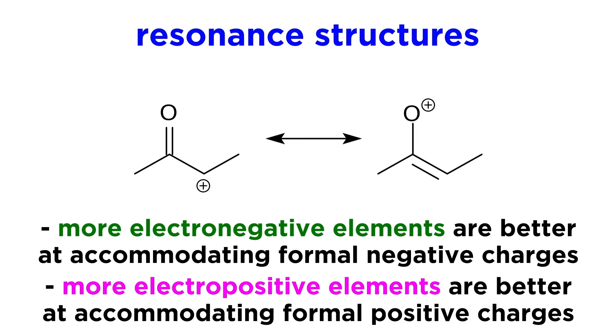By the same token, more electropositive elements are better at accommodating formal positive charges. This means that given another situation involving oxygen and carbon, the structure that has the positive charge on the carbon atom will be more favorable, and thus more strongly contributing to the composite.